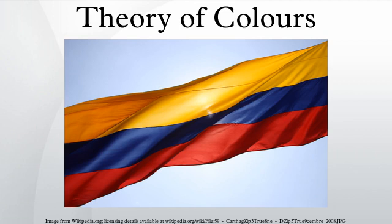Theory of Colors is a book by Johann Wolfgang von Goethe about the poet's views on the nature of colors and how these are perceived by humans. Published in 1810, it contains detailed descriptions of phenomena such as colored shadows, refraction, and chromatic aberration. The work originated in Goethe's occupation with painting and mainly exerted an influence onto the arts.